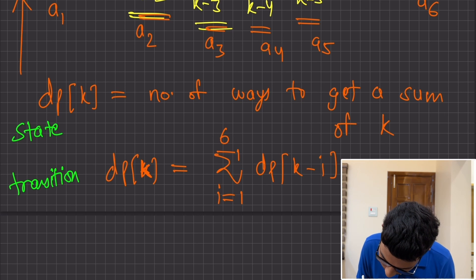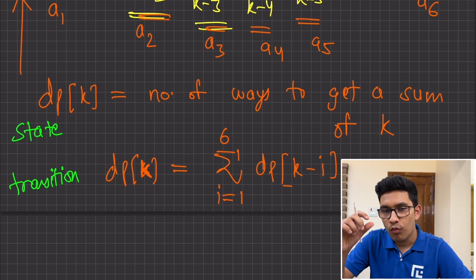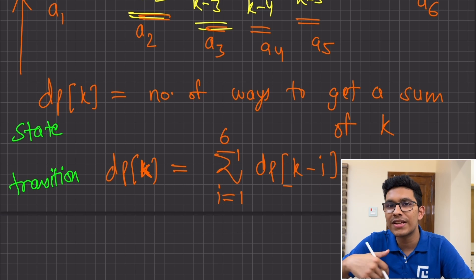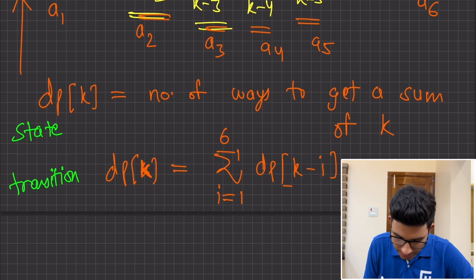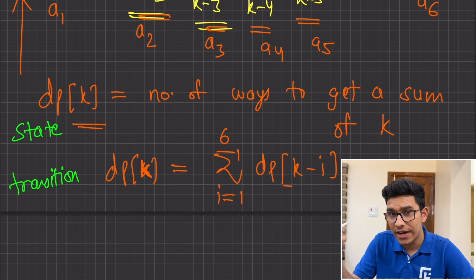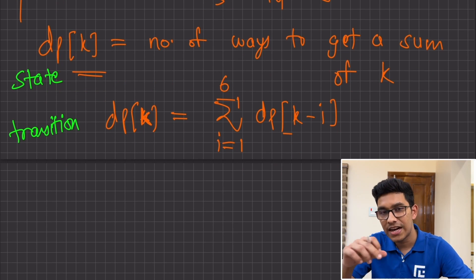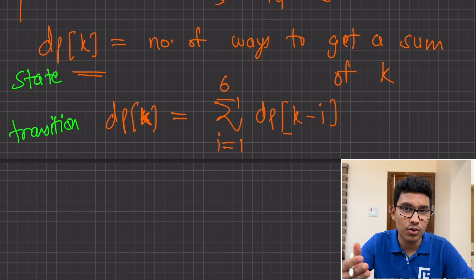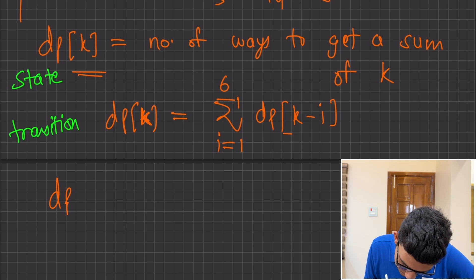Now think about the smallest sub-problem for which you don't have to further divide it — the one for which you already know the answer. dp of k is the number of ways to get a sum of k. We start from the sum of 0. And the number of ways to get a sum of 0 is just 1, because you are not going to roll any dice. So dp of 0 is equal to 1. This is going to be the base case.